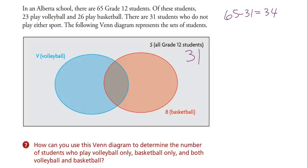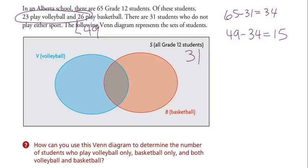We have 34 people left to account for, but we have 49 people listed between volleyball and basketball — 23 plus 26. So there are 15 extra, and those 15 people belong in the middle: they play both sports.